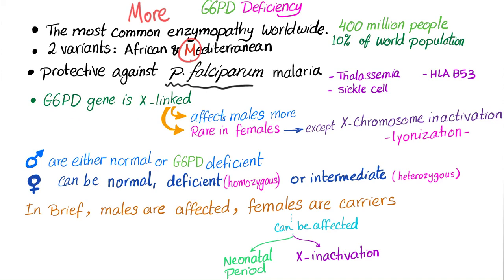The G6PD gene is X-linked. This disease is X-linked recessive, and anything X-linked recessive almost exclusively affects boys — so it affects males more. Many students believe that X-linked recessive diseases only affect boys. That's not correct, and a medical professor may challenge you on this — if you say no females are affected, they'll point out you're wrong.